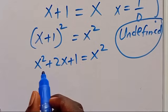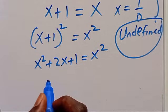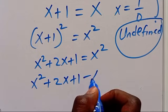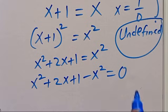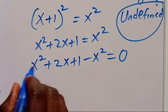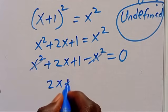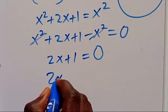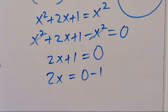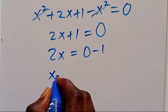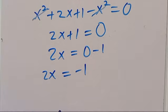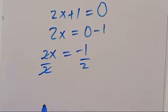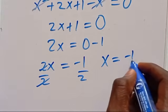Collecting like terms: x squared plus 2x plus 1 minus x squared equals 0. The x squared terms cancel out, giving us 2x plus 1 equals 0. So we have 2x equals minus 1. Dividing both sides by 2, we get x equals minus 1 divided by 2.